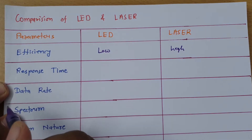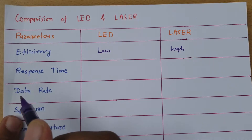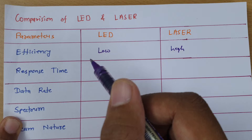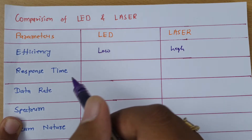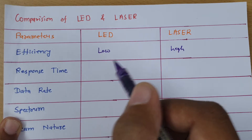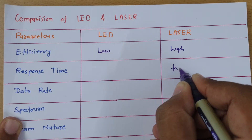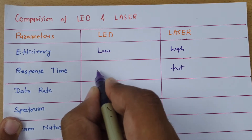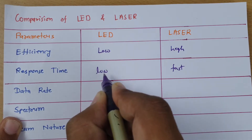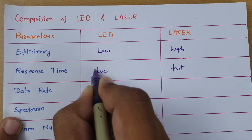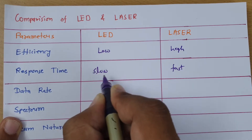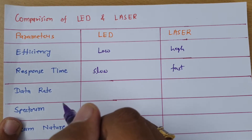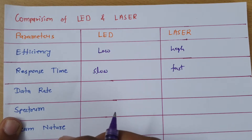Now response time — it is the time taken by a device to respond in terms of light output. The response time of laser is fast compared to LED, while the response time of LED is slow, meaning it takes a little more time to respond.